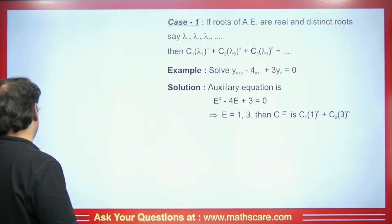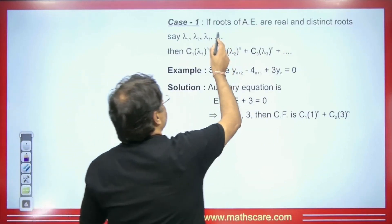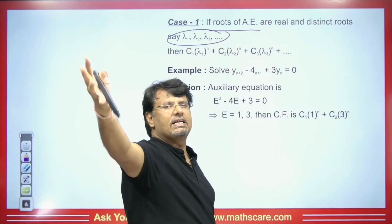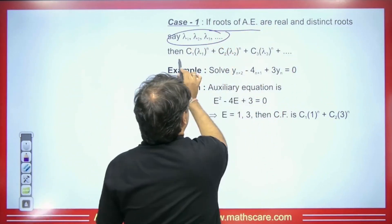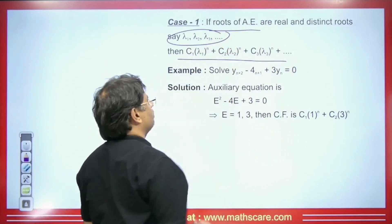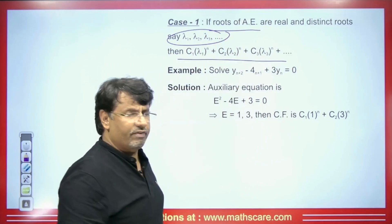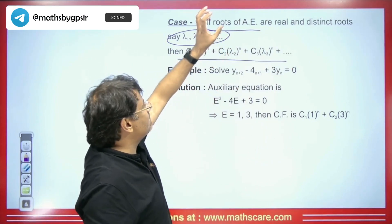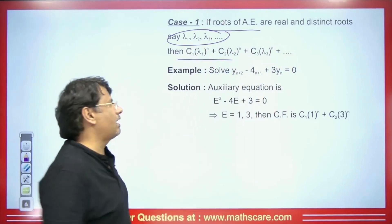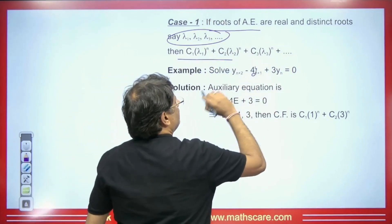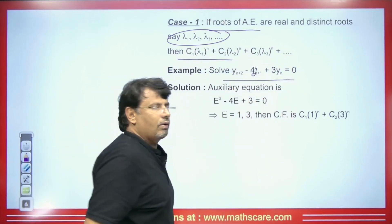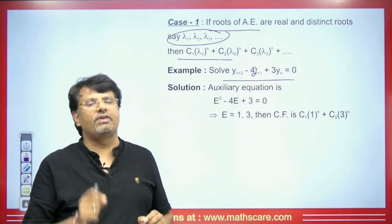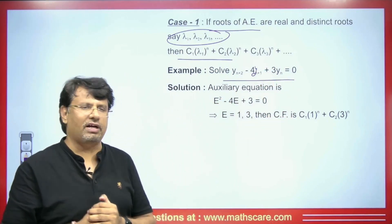How will we do it? Suppose the auxiliary equation has roots lambda1, lambda2 — all real and distinct. In that case, its complementary function will be of this form. For example, if we have yn+2 - 4yn+1 + 3yn = 0, and we have to solve a question with the difference equation given, first set it equal to 0. This means only the complementary function will come and the particular integral will be 0.